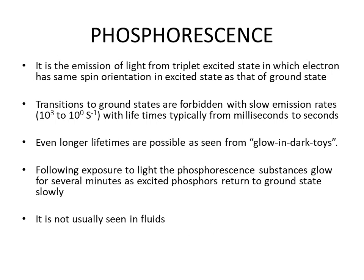Phosphorescence is the emission of light from a triplet excited state, in which the excited electron has the same spin orientation as the electron in the ground state. When a substance is irradiated and one electron gets excited into the triplet excited state, the excited electron has the same spin as that of the electron in the ground state. When it returns to the ground state it emits radiation — that is the phenomenon of phosphorescence.